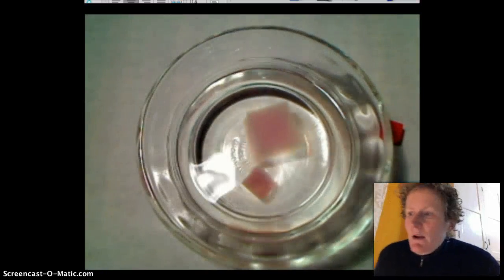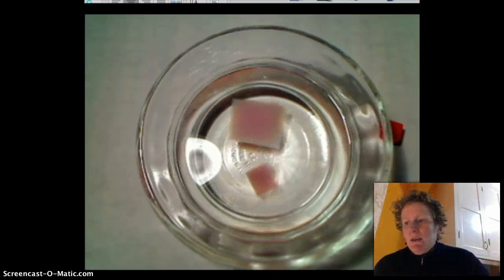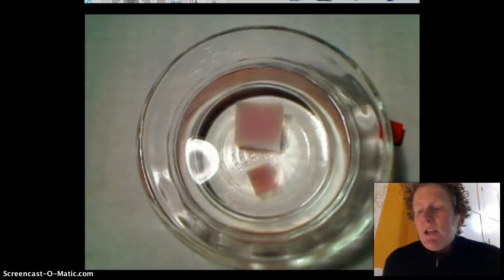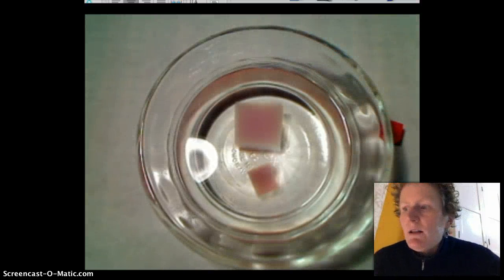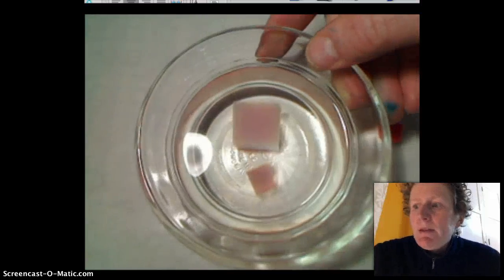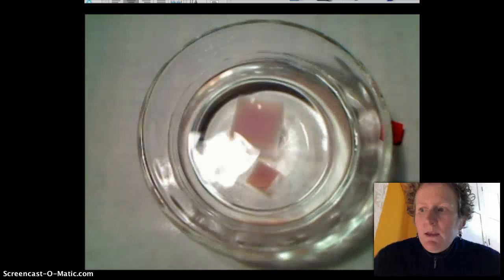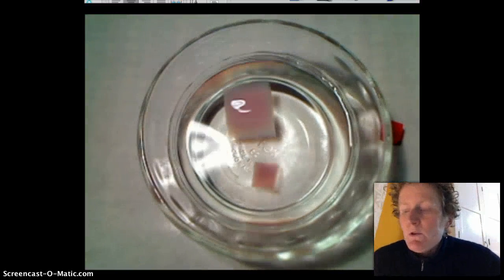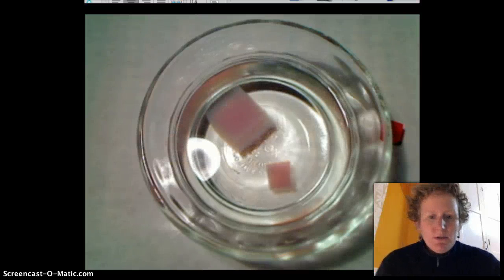What gives the agar its pink color is phenolphthalein and that phenolphthalein changes color as it hits an acid. It's pink in base and turns colorless in acid and vinegar is going to turn those cubes white on the outside edges as the vinegar diffuses in.